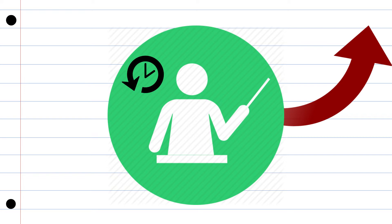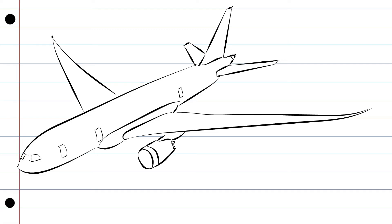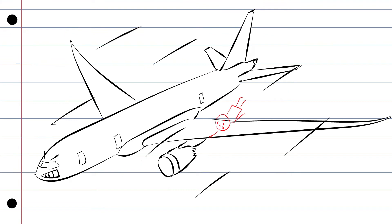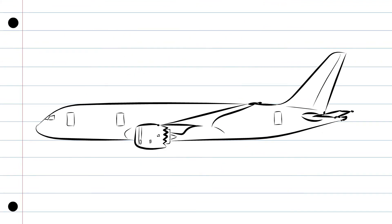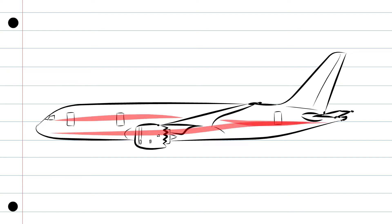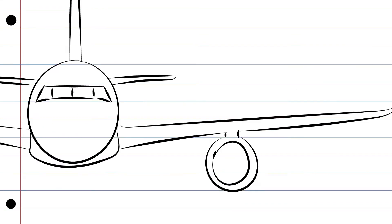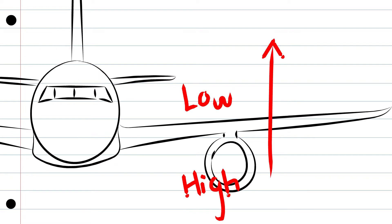Okay, back to our lesson. Induced drag is a type of drag that is generated by the lift force, so it will always be there — you cannot get rid of it. We explained before how the air flows above and below the wing and that creates low pressure above the wing and high pressure under the wing, and this difference in pressure is the reason the plane lifts off of the ground.